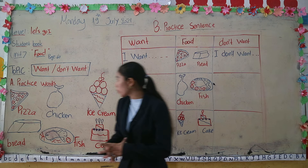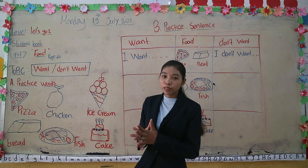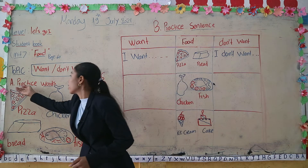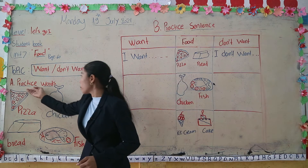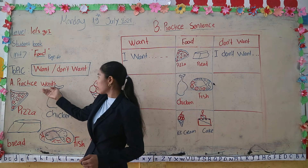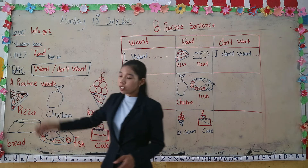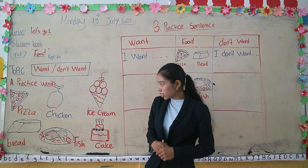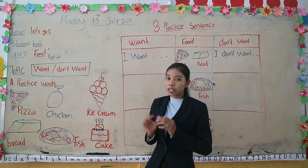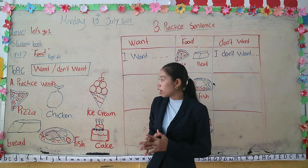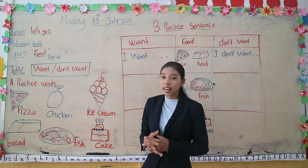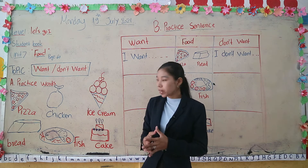Okay everyone, so now we know about the word 'want' and 'don't want.' Let's move to practice words. We have six words and six pictures.